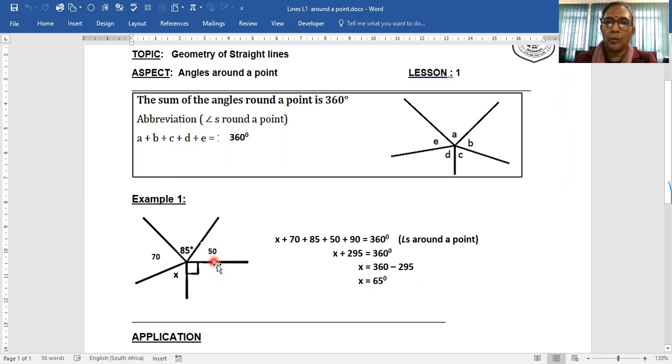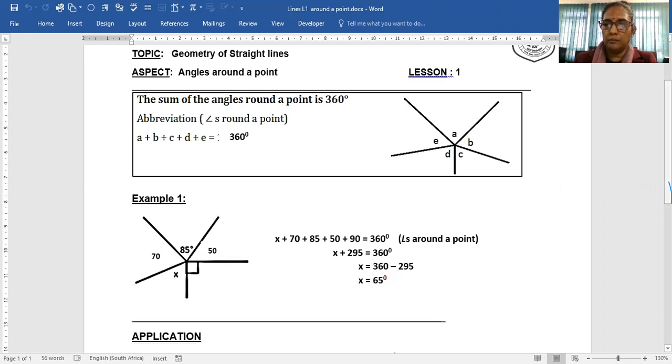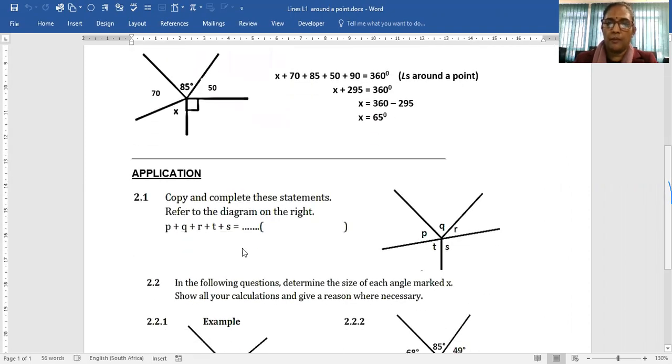So you work at angles on the point, it gives you 65 degrees in this example. In your application, we have P, Q, R, T, S, all angles around the point. So it's equal to, you need to fill in the blank and give your reason.